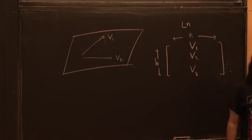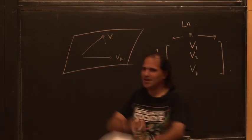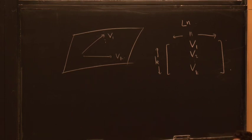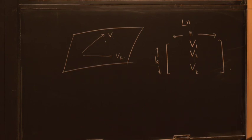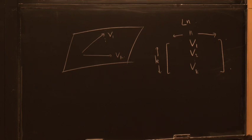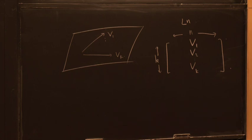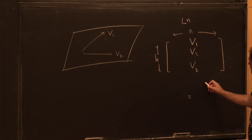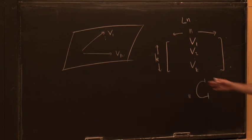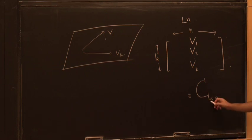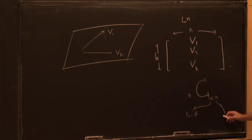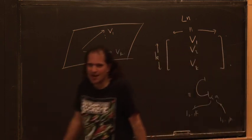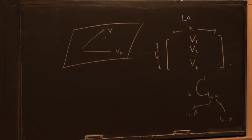There will be many Grassmannians in our study of amplitudes — some just in the external kinematical space. We'll see that even points in spacetime, interpreted in twistor space, can be thought of as points in G(2,4). I'm going to call most of our Grassmannians by the symbol C, labeled as C_{alpha A}, where alpha runs from 1 to k and A runs from 1 to n.